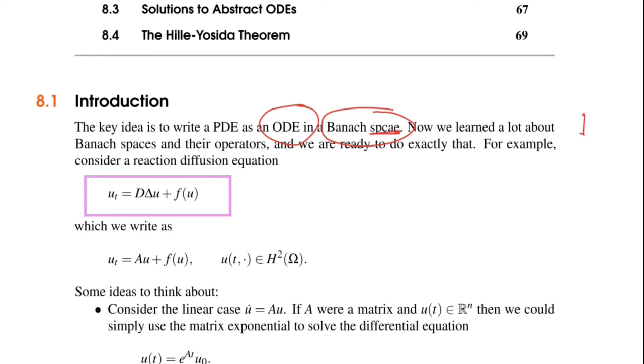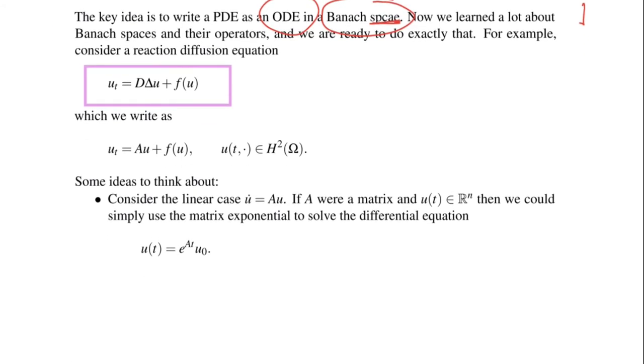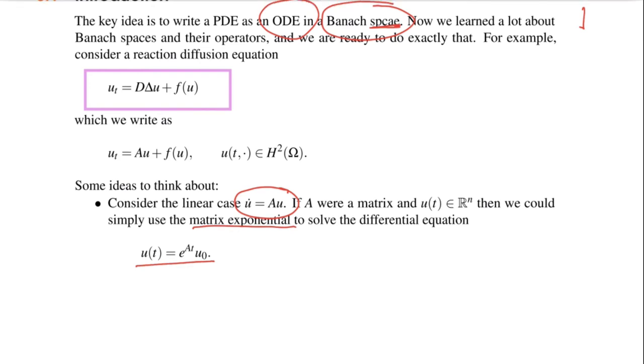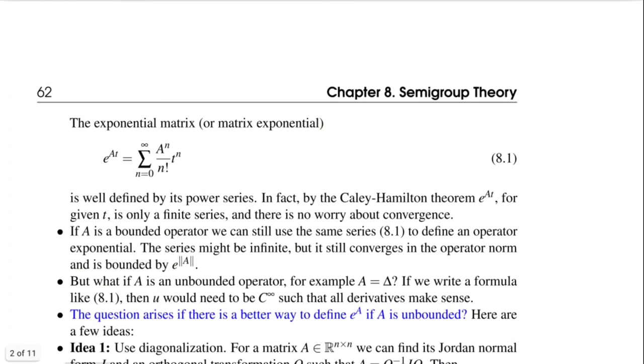Let's look at the ODE theory again. For example, if I have the differential equation u dot equals Au, where A is a matrix, then we would solve this with the matrix exponential, e to the At. So then the solution is u of t equals e to the At times u zero. But what do we do if A is an unbounded operator? How can we define a matrix exponential for an operator? And that's exactly what semigroup theory is all about.